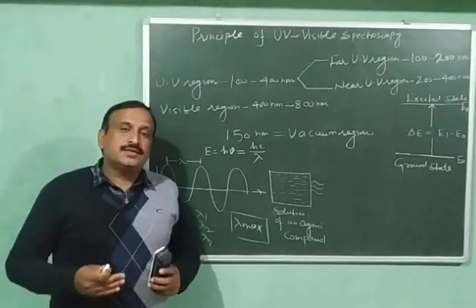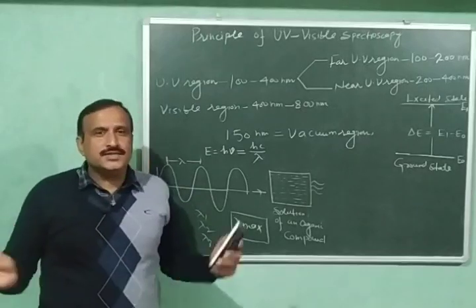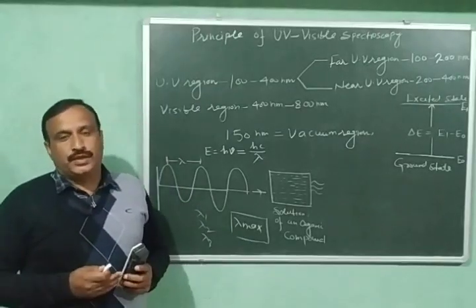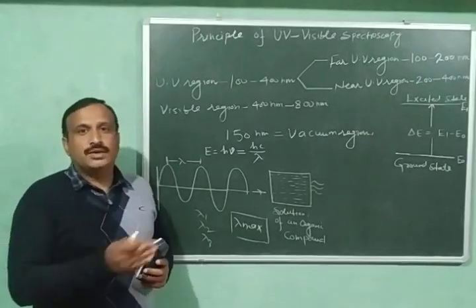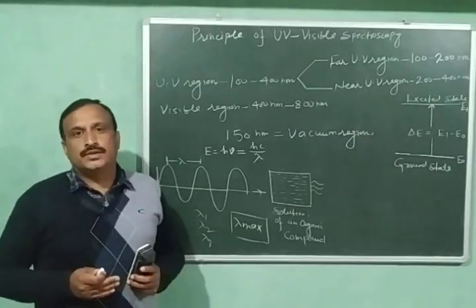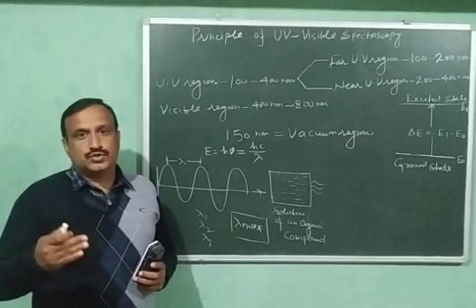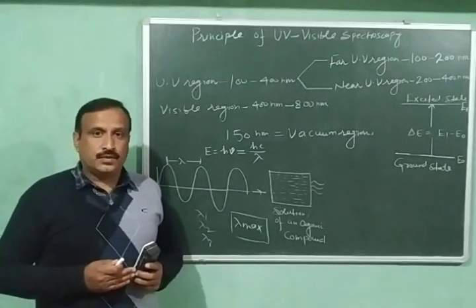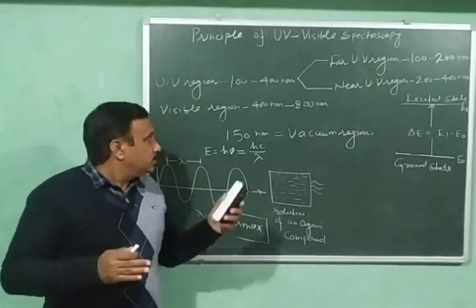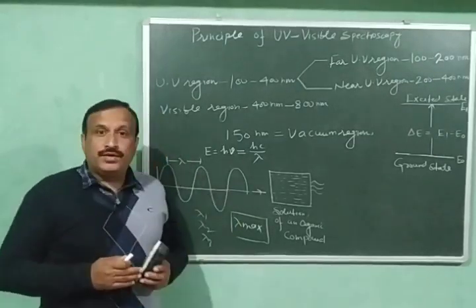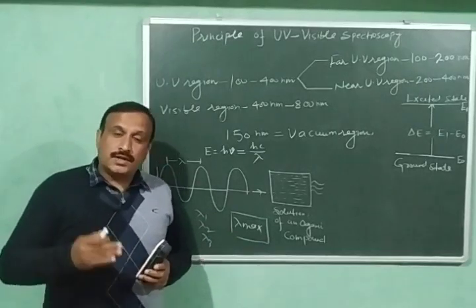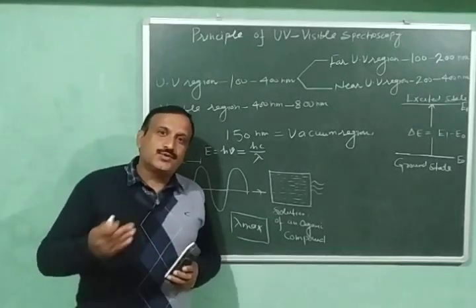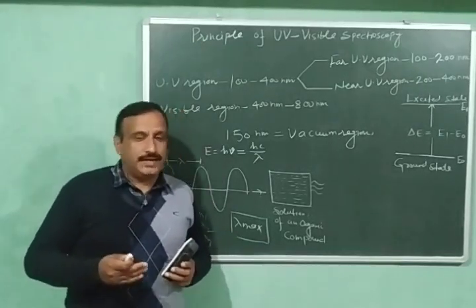So measurements in this region are done by flushing the instrument with nitrogen. Then the oxygen will come out of the instrument and nitrogen will be present inside it. However, below 150nm nitrogen also starts absorbing UV radiations.